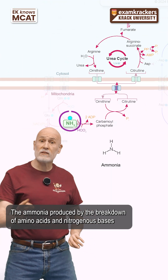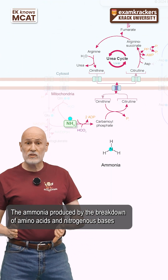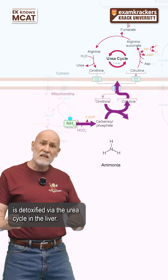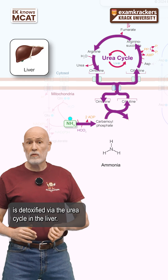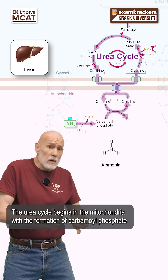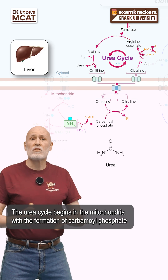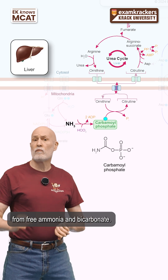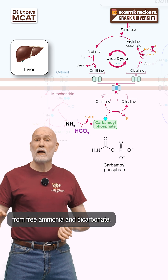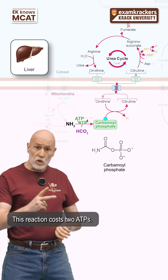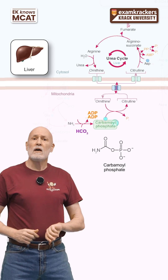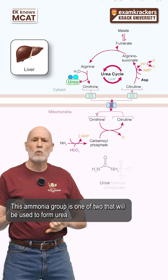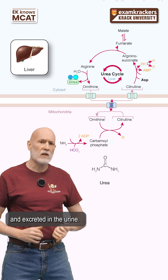The ammonia produced by the breakdown of amino acids and nitrogenous bases is detoxified via the urea cycle in the liver. The urea cycle begins in the mitochondria with the formation of carbamoyl phosphate from free ammonia and bicarbonate. This reaction costs two ATPs. This ammonia group is one of two that will be used to form urea and excrete it in the urine.